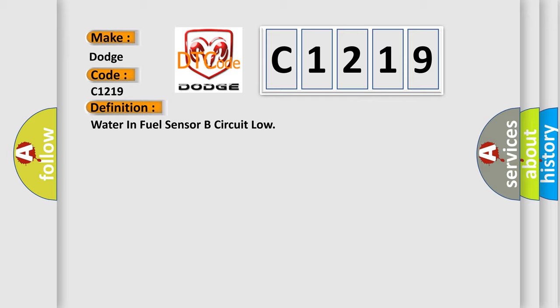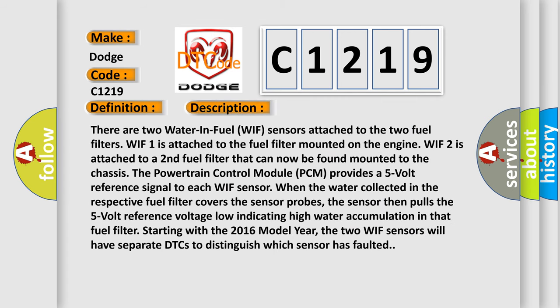Water-in-fuel sensor B circuit low. And now this is a short description of this DTC code.